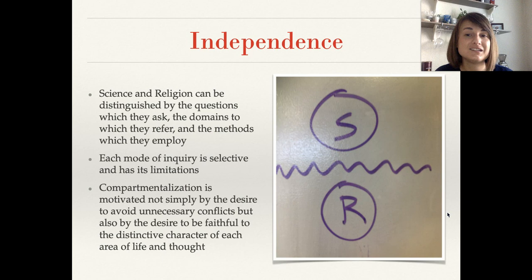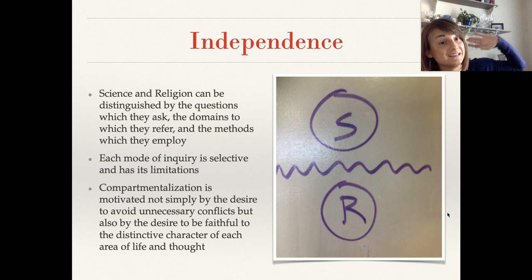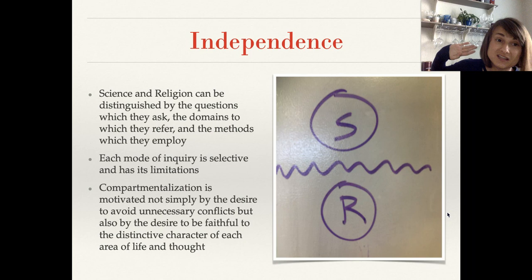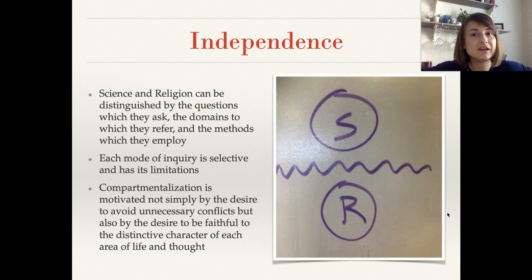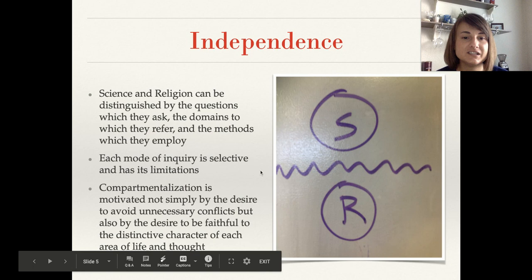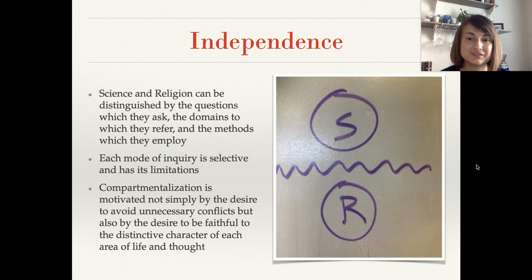First up, we have the independence model. In the independence model, science and religion can be distinguished by the questions which they ask, the domains to which they refer, and the methods which they employ. This basically means that science and religion are just completely separate entities. Science is over there asking its science questions about the physical world and getting science answers, and religion is over there asking its religion questions about the non-physical world and getting religious answers. They have no interaction or relationship with each other.